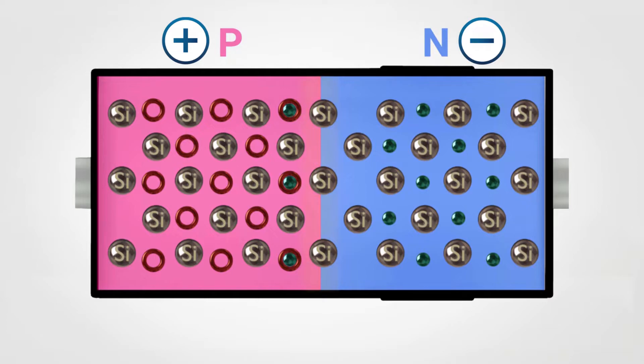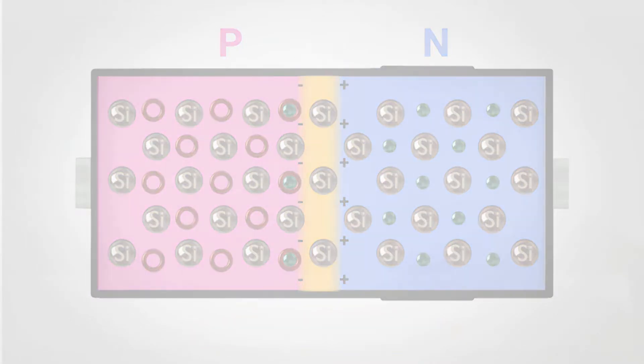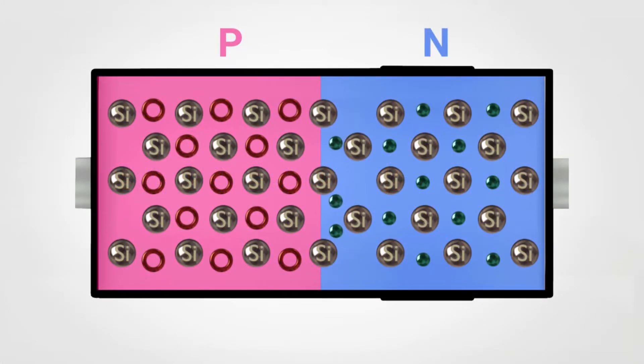In this situation, the border region of the P-side is slightly negatively charged, and the border region of the N-side is slightly positively charged. The consequent formation of a barrier potential prevents a further migration of electrons from N-side to P-side.